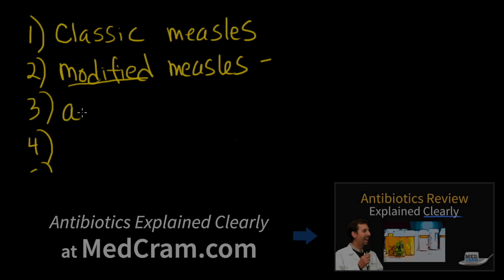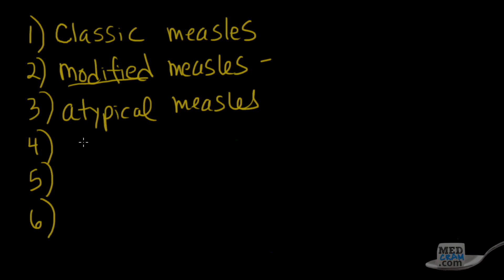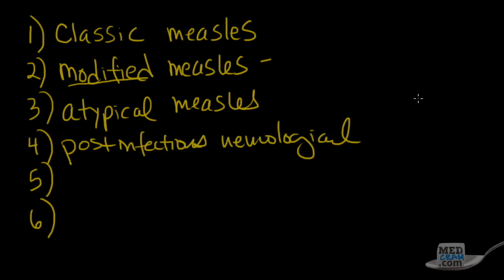The third syndrome is called atypical measles. We don't see it much anymore because it has to do with people who got the dead virus vaccine. Most MMR vaccines are live virus — this is why we don't give it to immunocompromised patients — but the dead virus given back in the mid-1960s would not provide the proper immune response. Another category is post-infectious neurological symptoms, including ADEM — acute disseminated encephalomyelitis — and SSPE, subacute sclerosing panencephalitis. These are serious complications we'll discuss briefly.